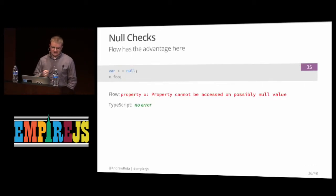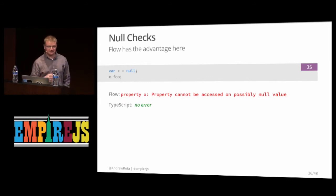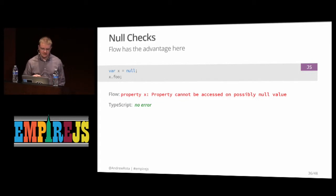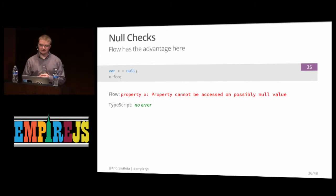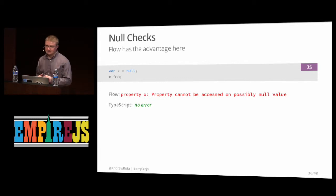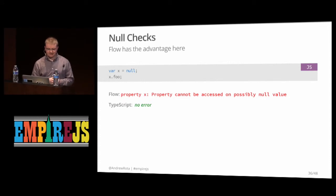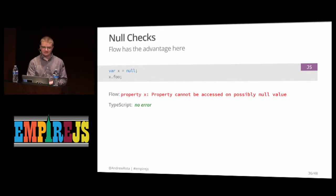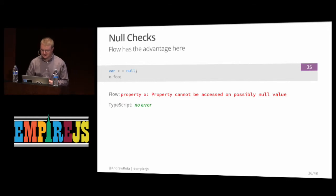One area where Flow has an advantage over TypeScript is null checking. Flow is stricter about null values being misused — if you set something to null and try to access a property on it, Flow knows null doesn't have that property and will throw an error. TypeScript won't say anything in that case — that's part of how the language is built, and there's discussion about changing it, but for now that's one place where Flow has an advantage.